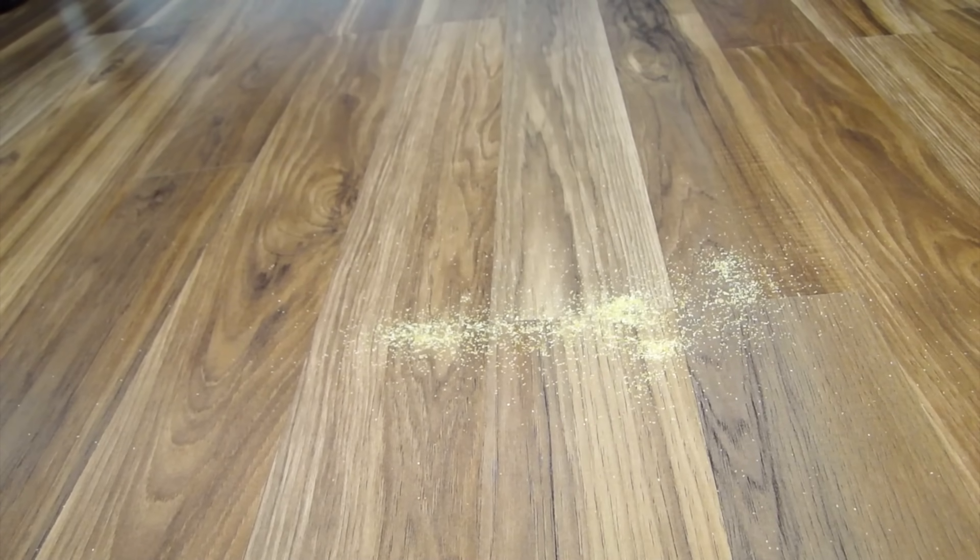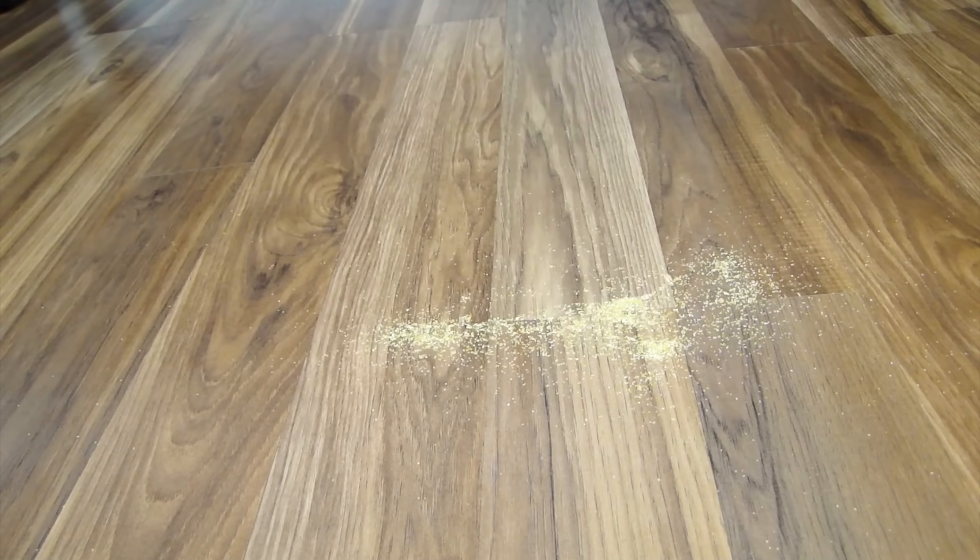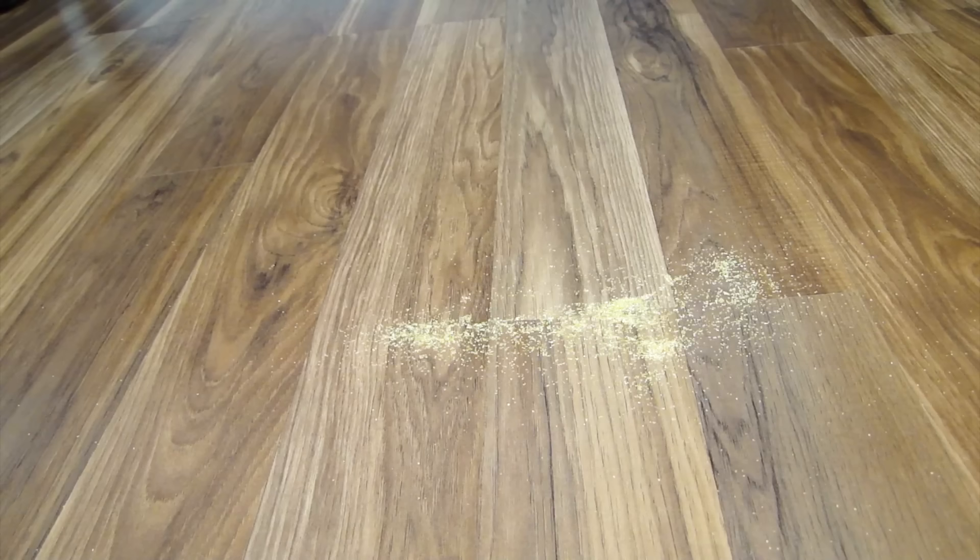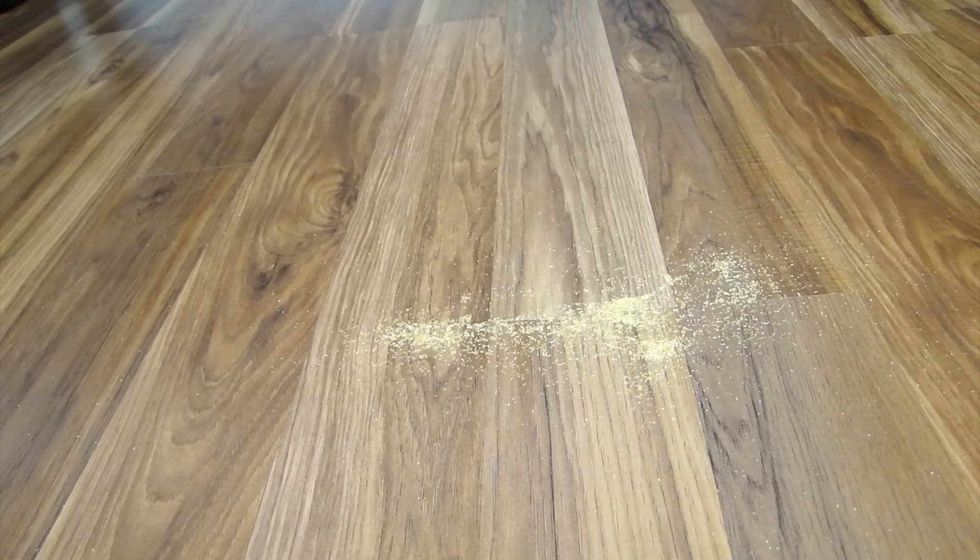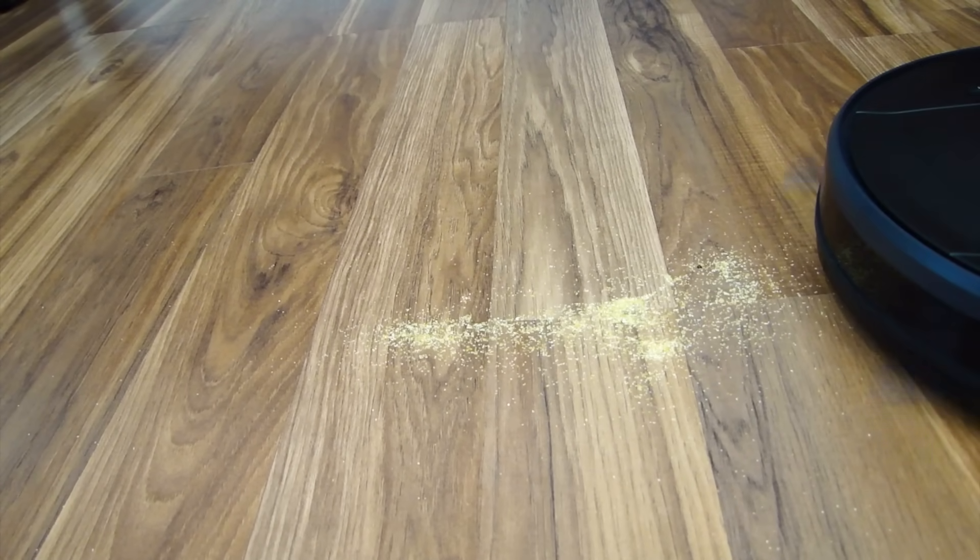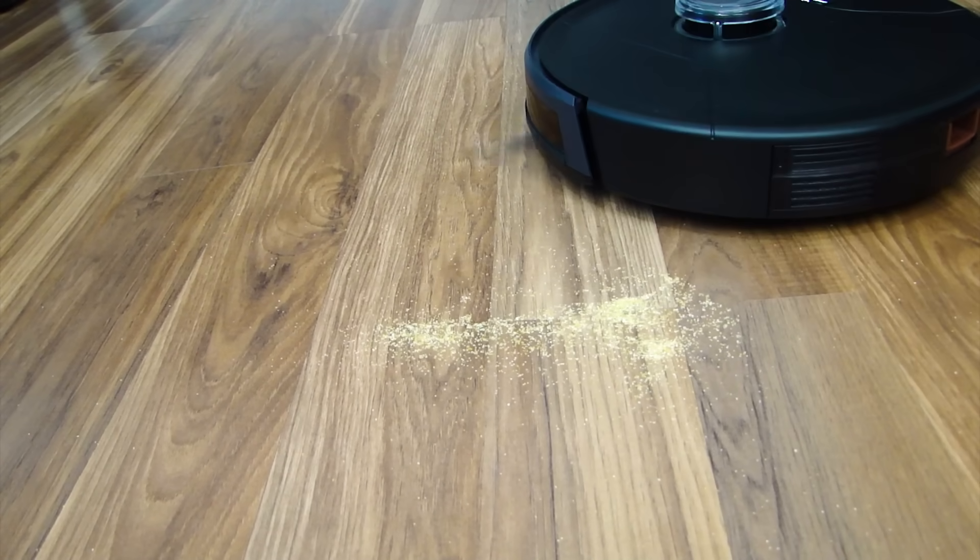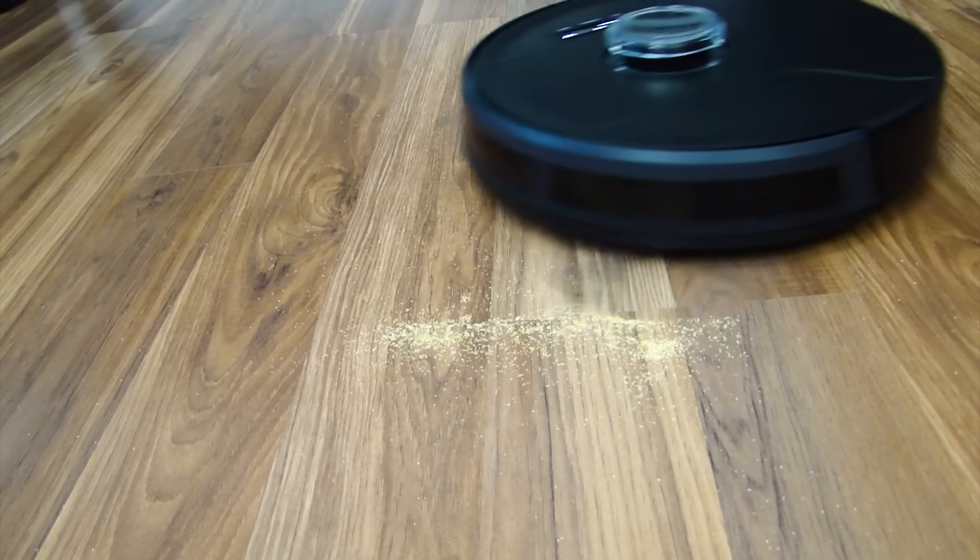So the first test is seeing how good they can normally vacuum. This on the floor is corn flour which is kind of like a grainy flour type thing. Normal vacuum it shouldn't have a problem with this. Here he goes. Well he's kind of getting the area. He got some of it.